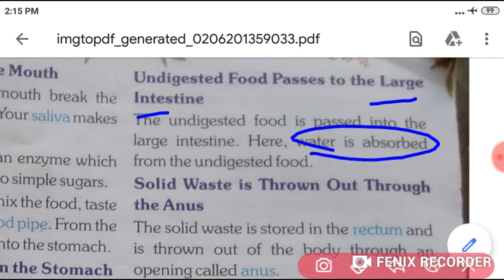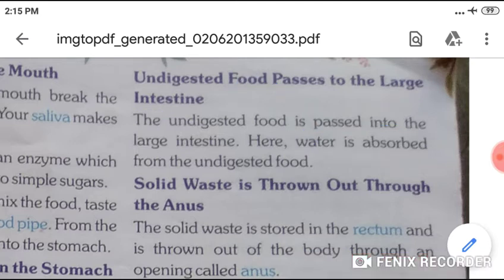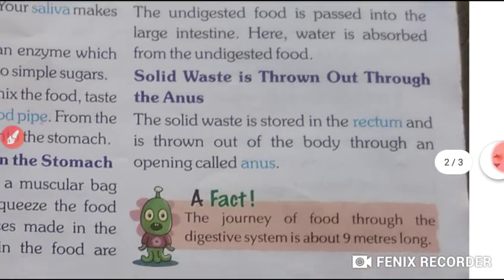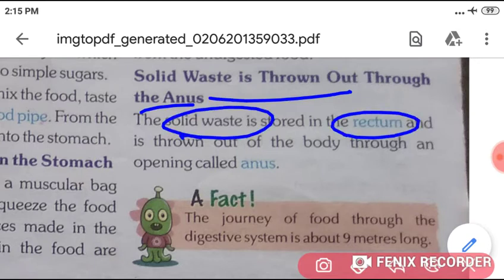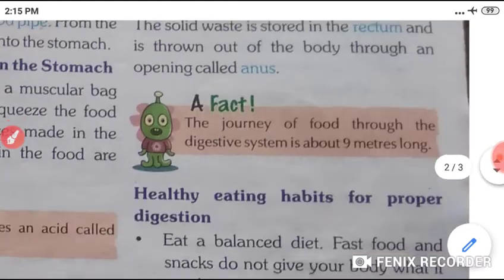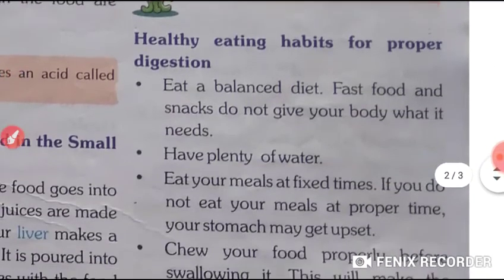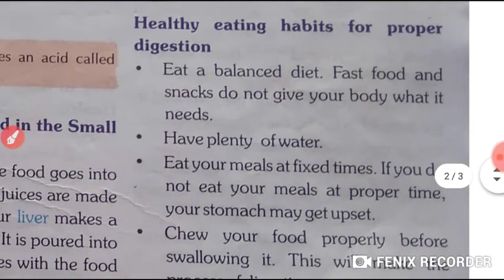Water is absorbed from this undigested food. The solid waste is thrown out through the anus. The solid part — solid waste — is stored in the rectum and thrown out through an opening called the anus.